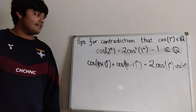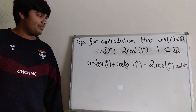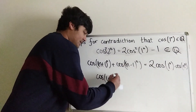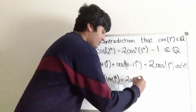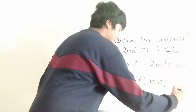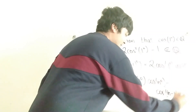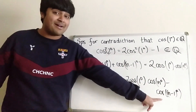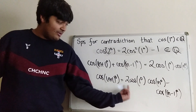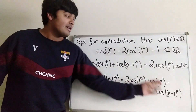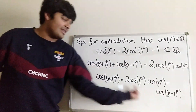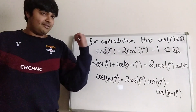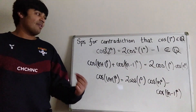Then we apply induction to prove that cosine of (n+1)° is always rational. Rearranging, cos(n+1)° equals two cos(1°)cos(n°) minus cos(n-1°). So provided cos(n°) is rational and cos(n-1°) is rational, we get two times a rational number times a rational number, minus another rational number — which is all in all rational. So that means this is rational. Therefore, provided the nth term and the (n-1)th term are rational, the (n+1)th term is rational.